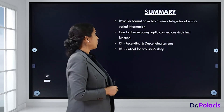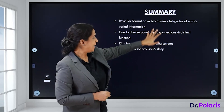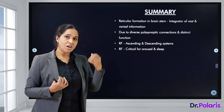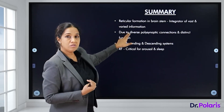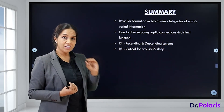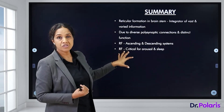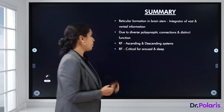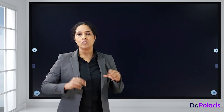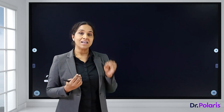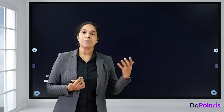In summary, the reticular formation in the brainstem is an integrator of vast and varied information being transferred to and from the brain. Due to its diverse polysynaptic connections, it has distinct functions including both the ascending and descending systems. The reticular formation is essential for arousal and sleep, and we covered its diffuse cell groups, nuclear divisions, afferent and efferent connections, and functions in detail.